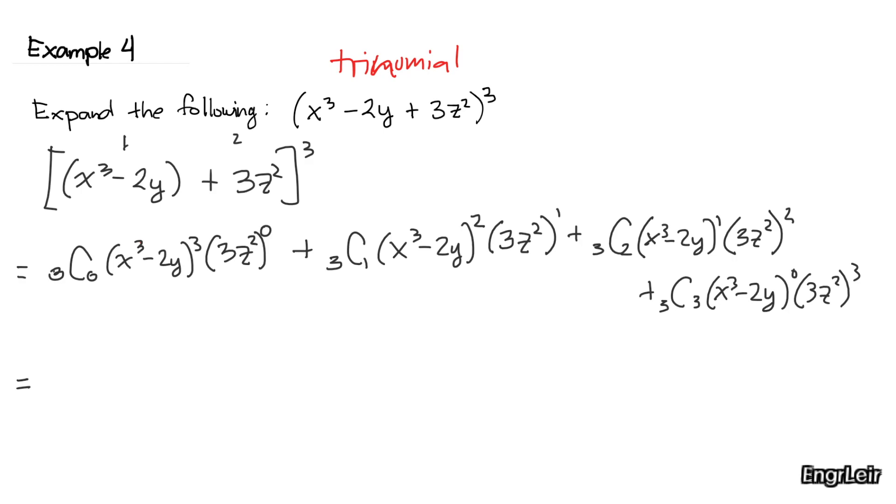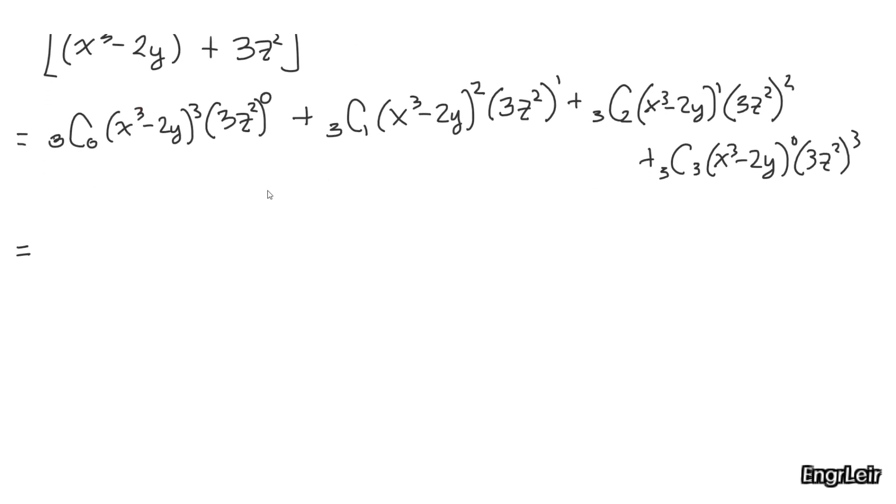After that, we can get the values of my binomial coefficients. 3 taken 0 is 1 times x cubed minus 2y raised to 3, and of course that's 1, so we won't write it.